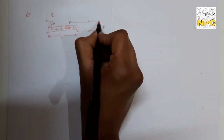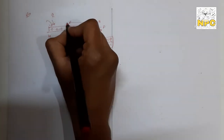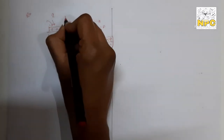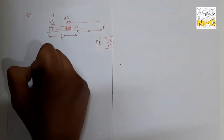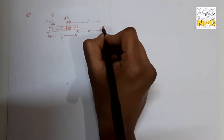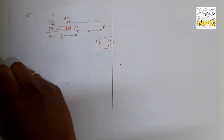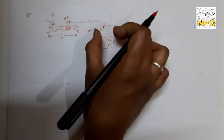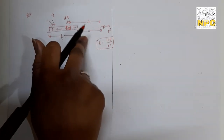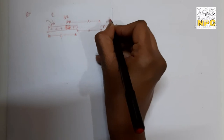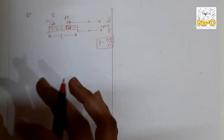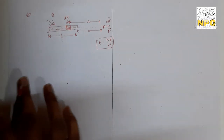We cut the wire into small parts. Suppose one small segment is at distance x from point P, the length of that segment is dx, and the charge on it is dq (since total charge is Q, the small segment has a small charge dq). The electric field due to this segment is in the direction away from the charge (positive charge → away from charge).